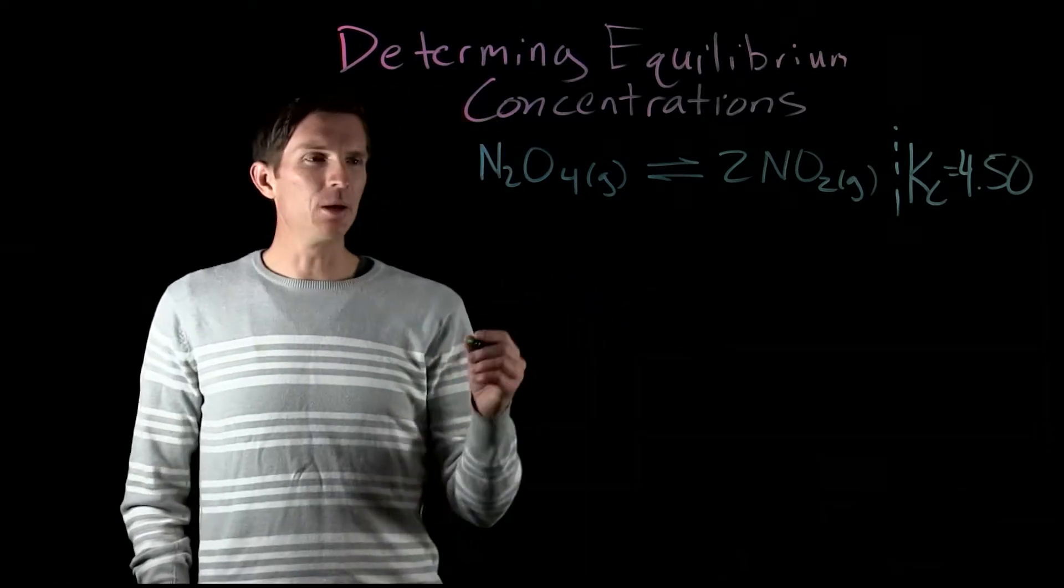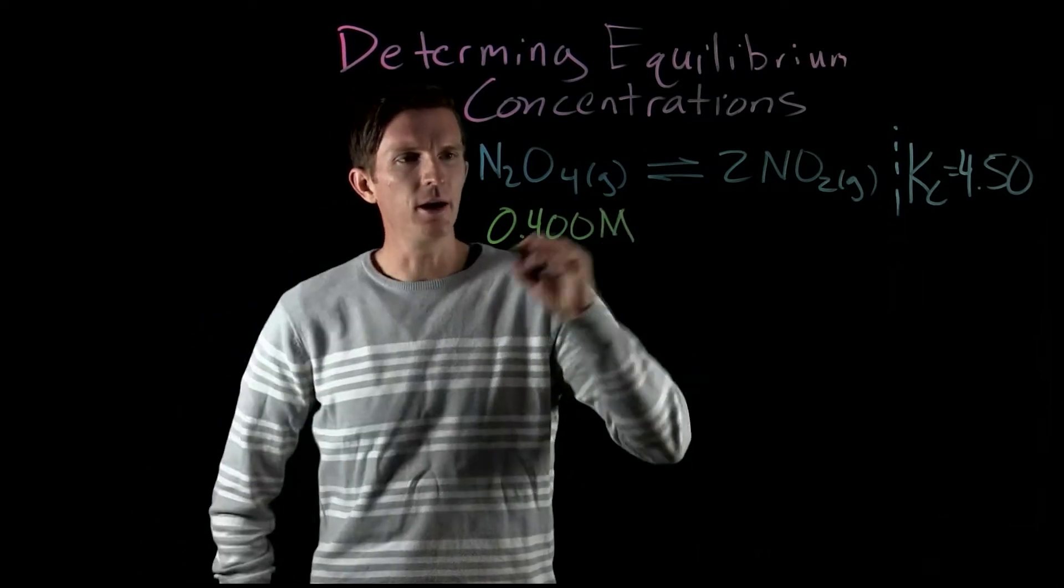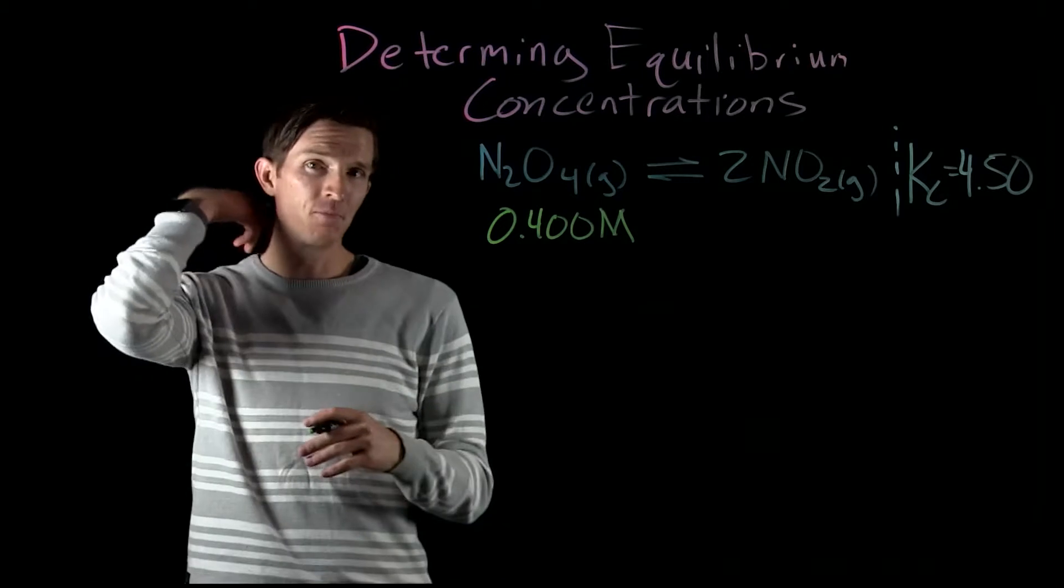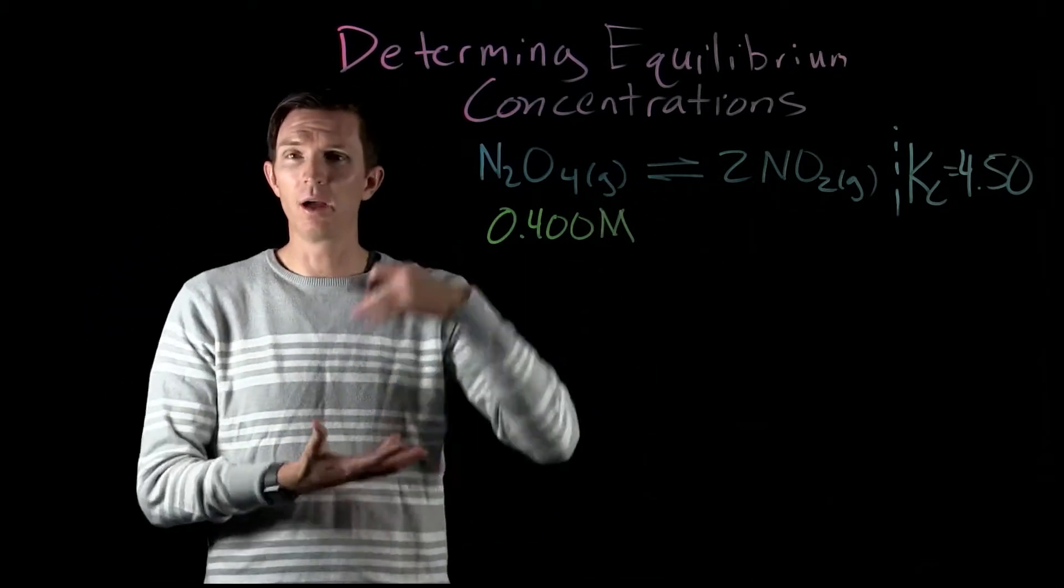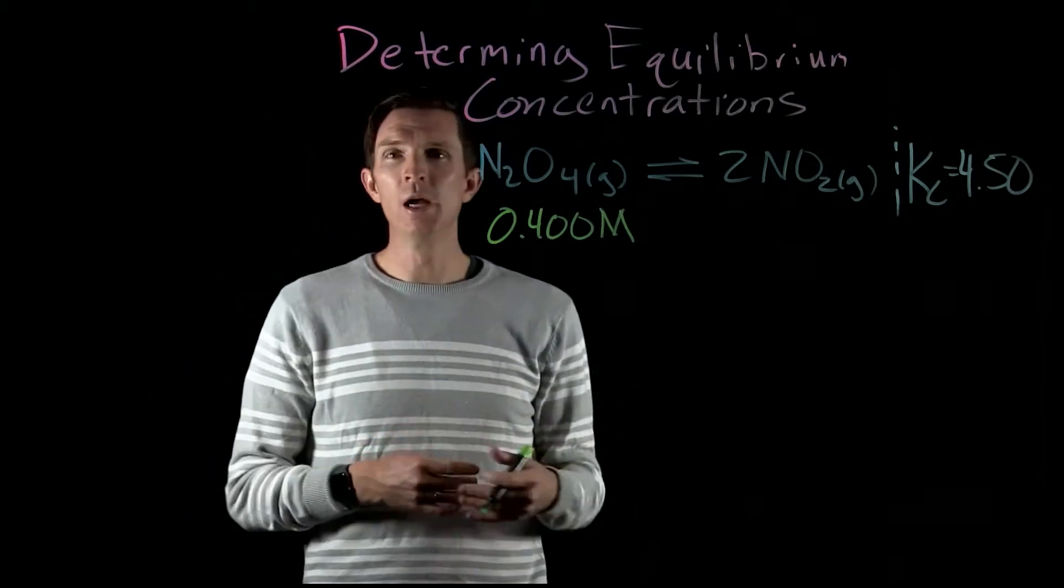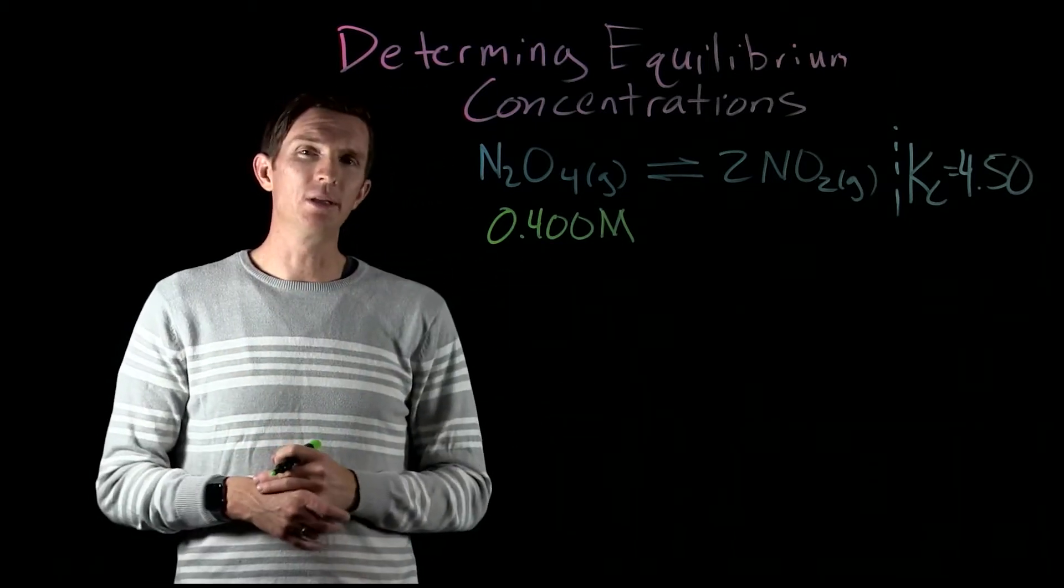Now let's say for example we started with 0.4 molarity of N2O4, so our reactant. We added that into a container—both of these are gases so we have maybe a metal container that we put them into—and we're going to let them react to give us the equilibrium that we would see between these two.